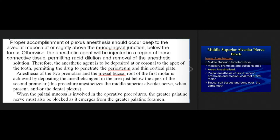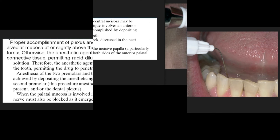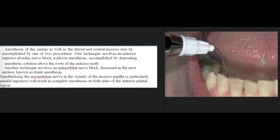Anesthesia of the two premolars and the mesial buccal root of the first molar is achieved by depositing the anesthetic agent just below the apex of the second premolar; this procedure anesthetizes the middle superior alveolar nerve, when present, and/or the dental plexus. When the palatal mucosa is involved in operative procedures, the greater palatine nerve must also be blocked as it emerges from the greater palatine foramen. Anesthesia of the canine as well as the lateral and central incisors may be accomplished by one of two procedures: an anterior superior alveolar nerve block (a plexus anesthesia) by depositing anesthetic solution above the roots of the anterior teeth, or an infraorbital nerve block (trunk anesthesia). Anesthetizing the nasopalatine nerve in the vicinity of the incisive papilla, a particularly painful injection, will result in complete anesthesia on both sides of the anterior palatal region.